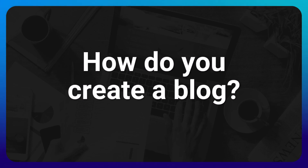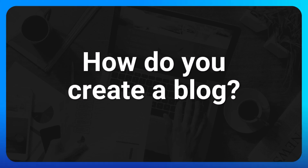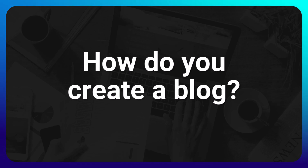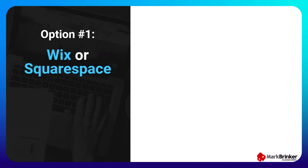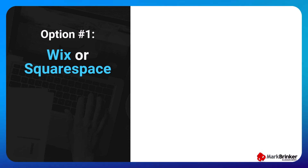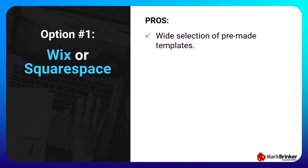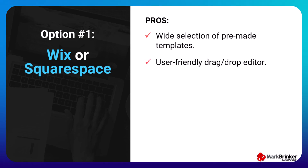There are tons of different platforms for creating a blog, but if it were me, I would narrow it down to the following three options. Option number one: Wix or Squarespace. If you want to get up and running quickly with a respectable-looking blog and or website, Wix or Squarespace would be good choices. The upside is they offer a wide selection of pre-made templates so you do not have to be a professional web designer, and they offer a user-friendly drag-and-drop editor so no coding is necessary, which is great for beginners or do-it-yourselfers.